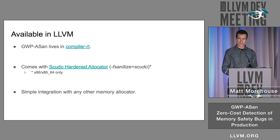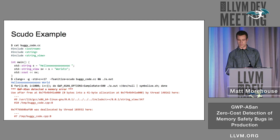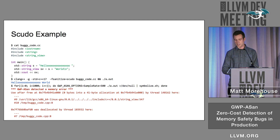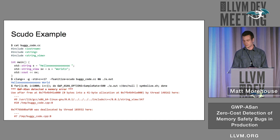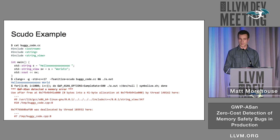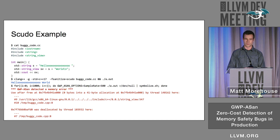It's also pretty easy to integrate GWP-ASAN with your own custom allocator. Here's a simple example: we have a small program with a use-after-free in it. If we compile the program with SCUDO and run it, the bug is not caught. But if we then enable GWP-ASAN by setting the sampling rate and run the program several times, GWP-ASAN will find it and print out stack traces for the allocation point, the free point, as well as the use-after-free point.